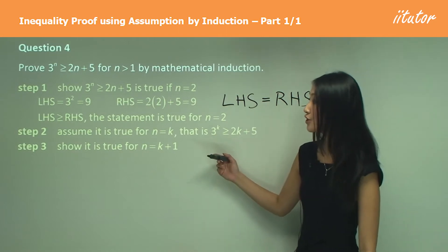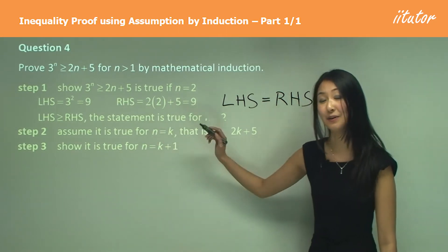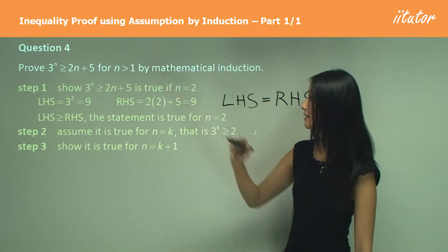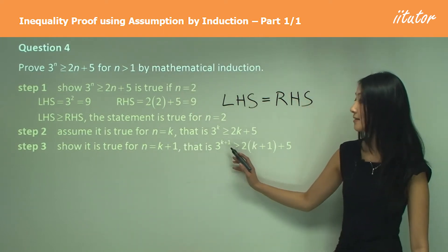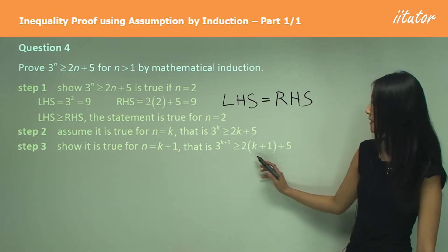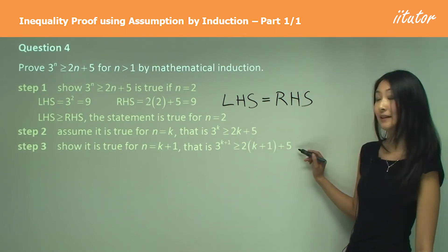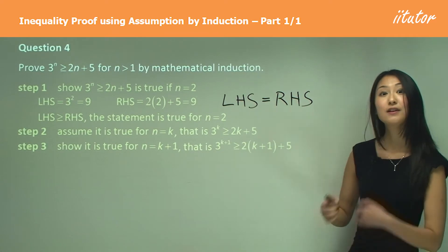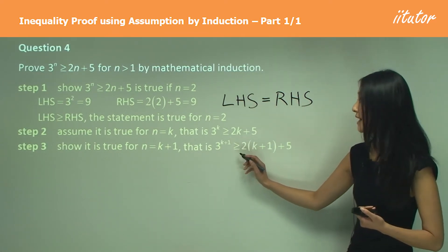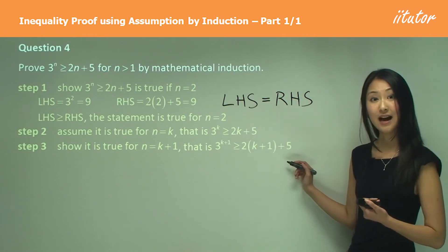Now we want to show in Step 3 that it is true for n equals k plus 1. Substituting that into the inequality, we want to show that 3 to the power of k plus 1 is greater than or equal to 2 times (k plus 1) plus 5.